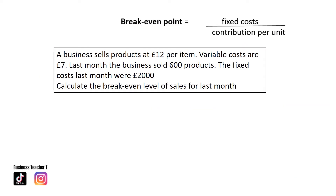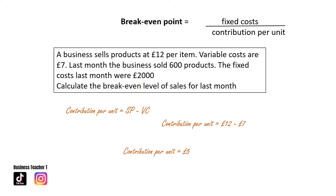A business sells products at £12 per item. Variable costs are £7. Last month the business sold 600 products and fixed costs were £2,000. Calculate the break-even level of sales for last month. Contribution per unit is selling price minus variable costs: £12 minus £7 equals £5. Inputting into the formula, fixed costs of £2,000 divided by contribution per unit of £5 gives an answer of 400 units. Did you get it right?